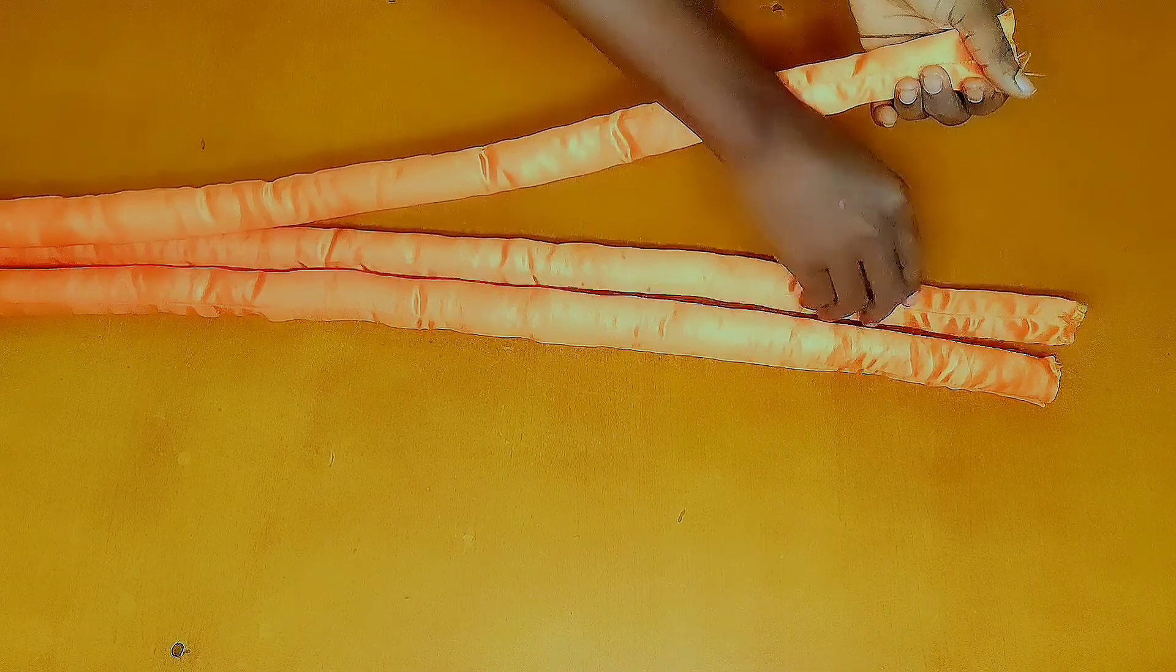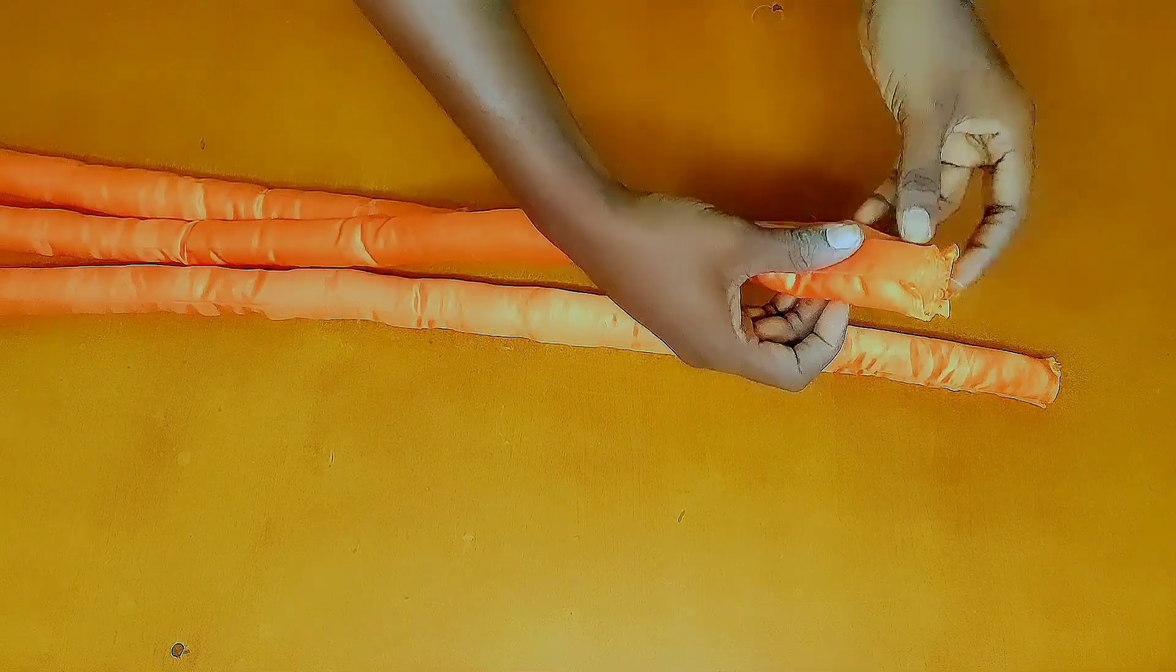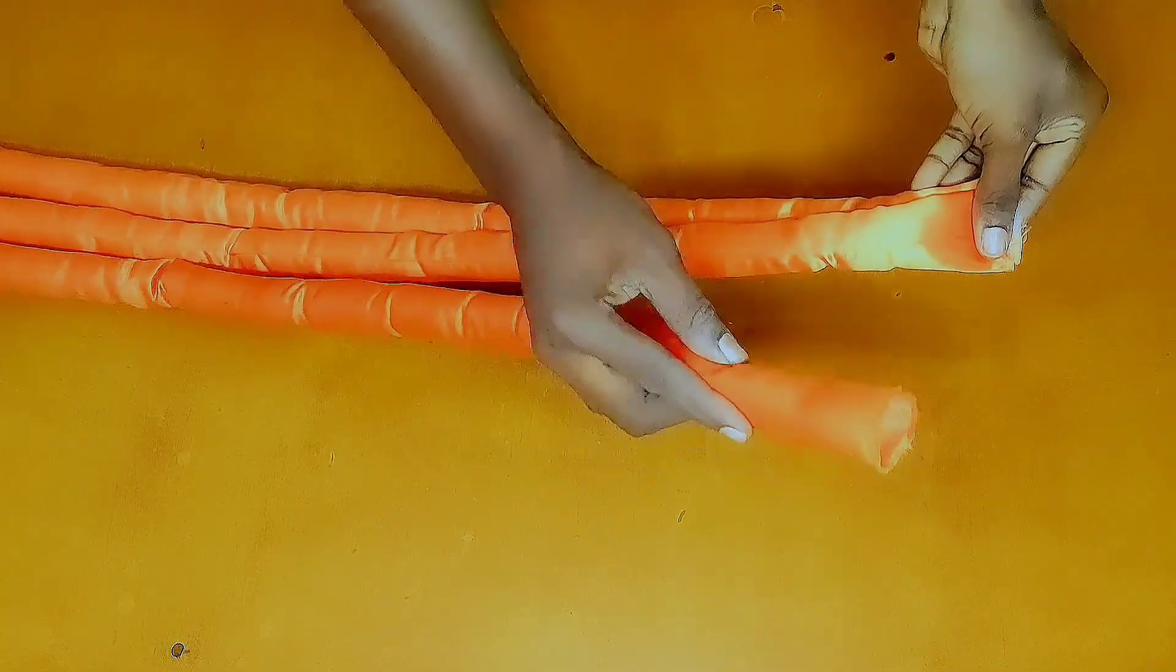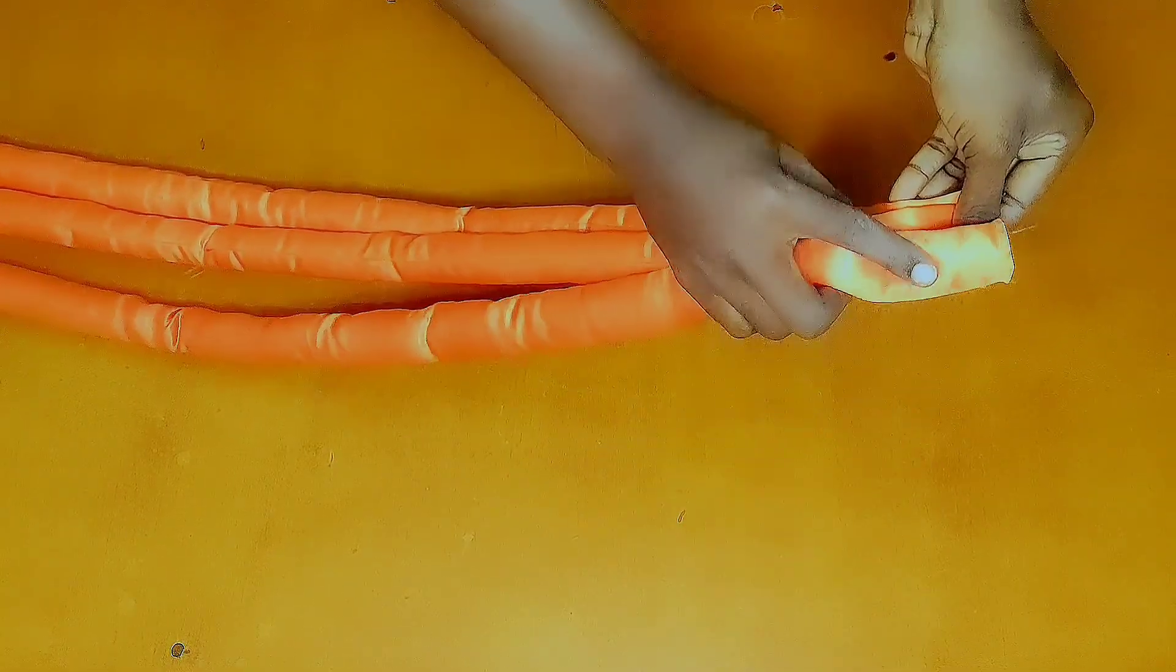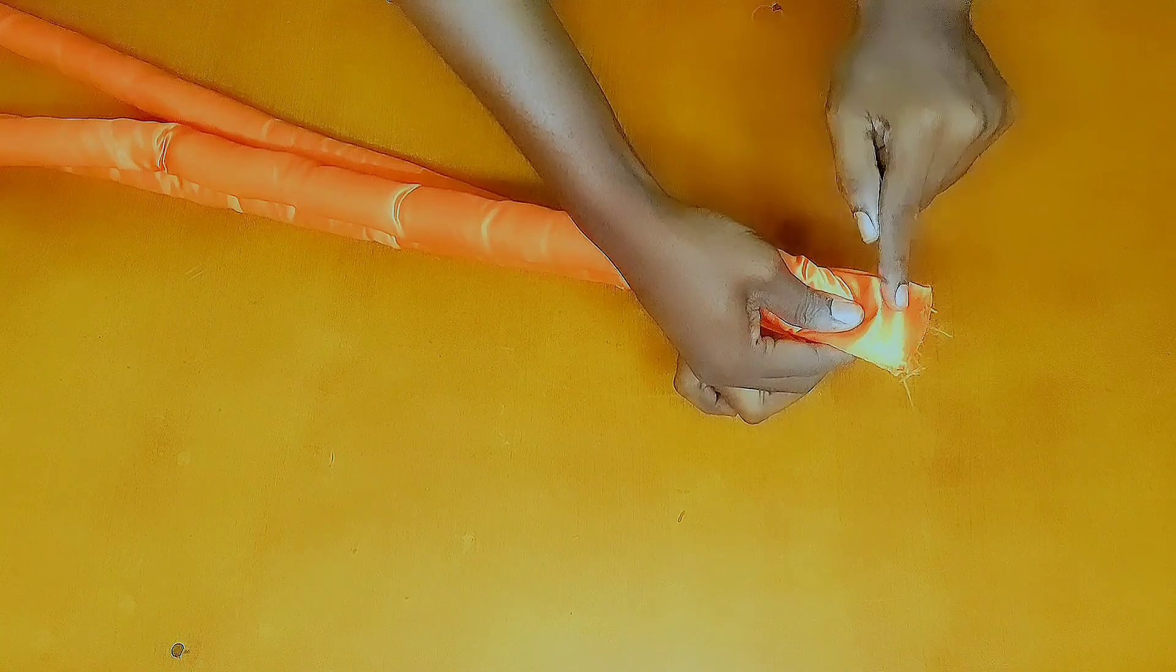Right here is the seam line of the first fabric. I would place the second one in the same direction. Then for the third one, I would face the seam line in the opposite direction like this. Once I'm done, I would stitch the three pieces together by half an inch right here.